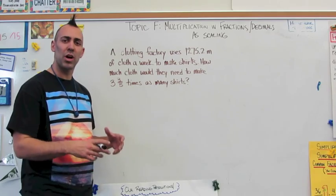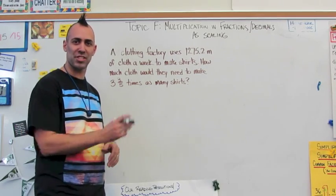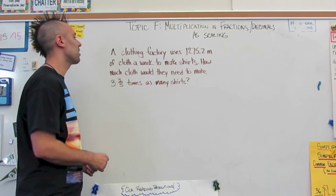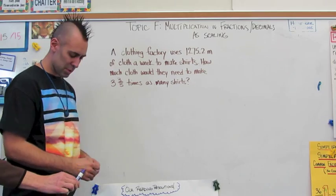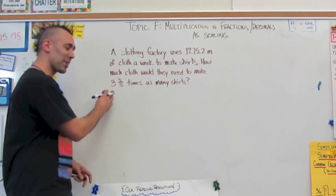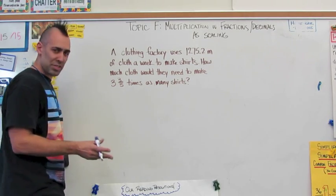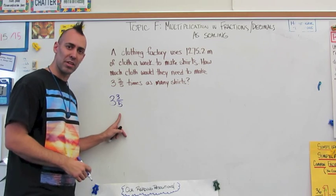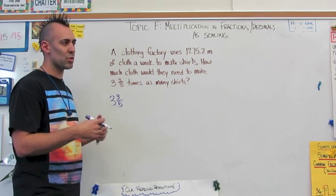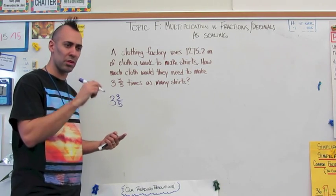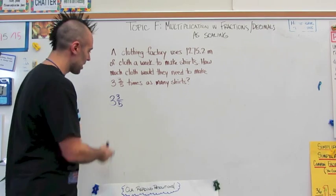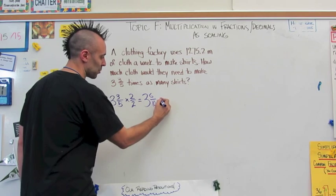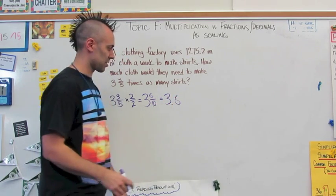In the last part of this topic, we'll use what we know about scaling factors and changing fractions to decimals to work out problems like this: a clothing factory uses one thousand two hundred seventy-five and two-tenths meters of cloth a week to make shirts. How much cloth would they need to make three and three-fifths times as many shirts? The first thing I'm going to look at is three and three-fifths. The denominator is fifths. I'll multiply by two over two to get three and six-tenths, which written as a decimal is three point six.